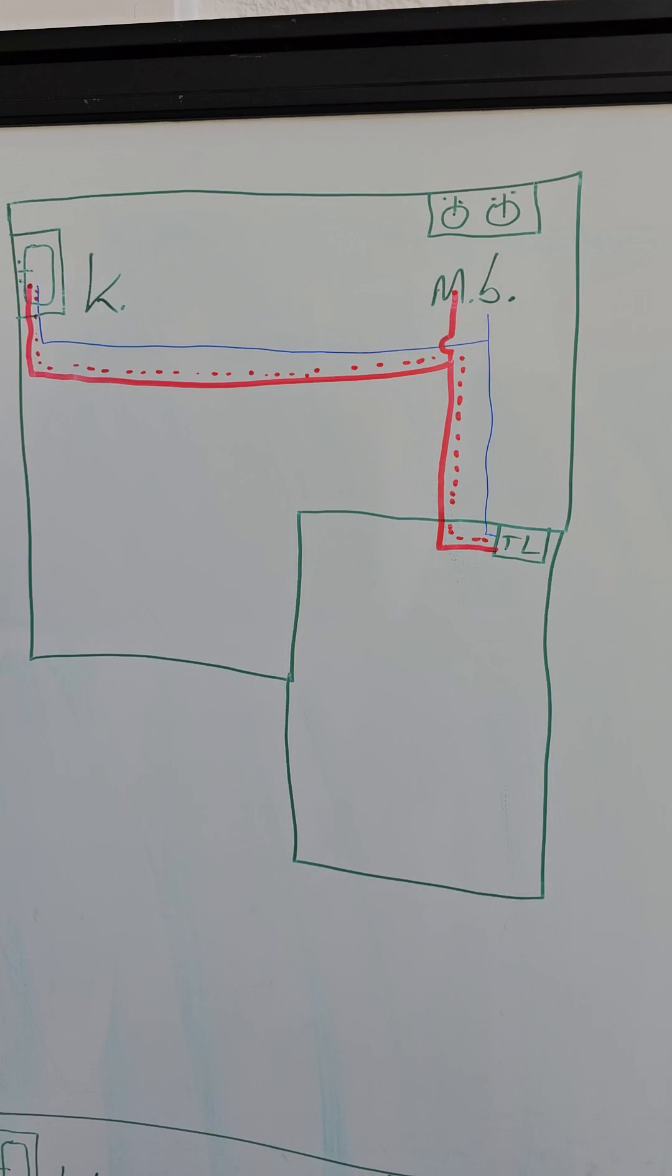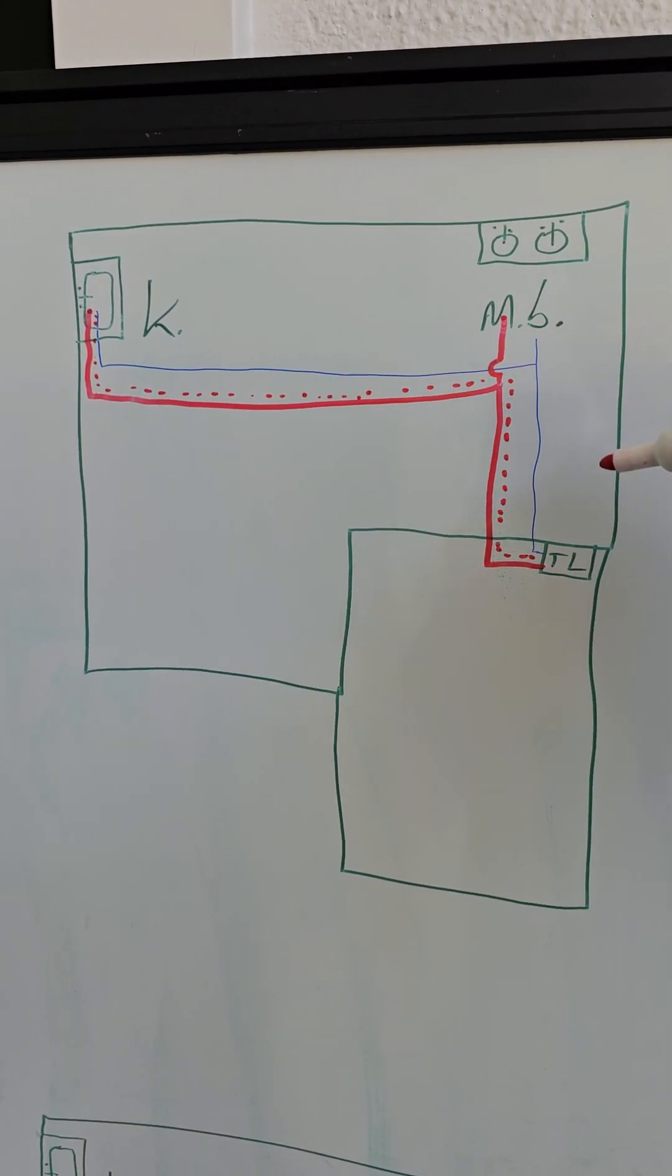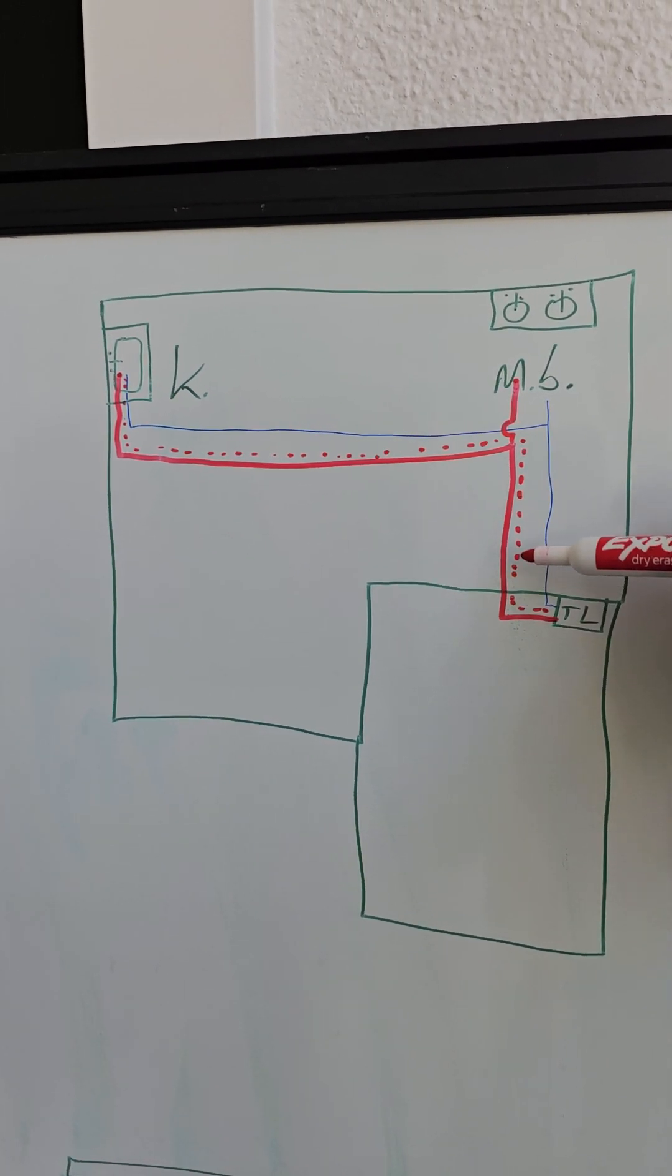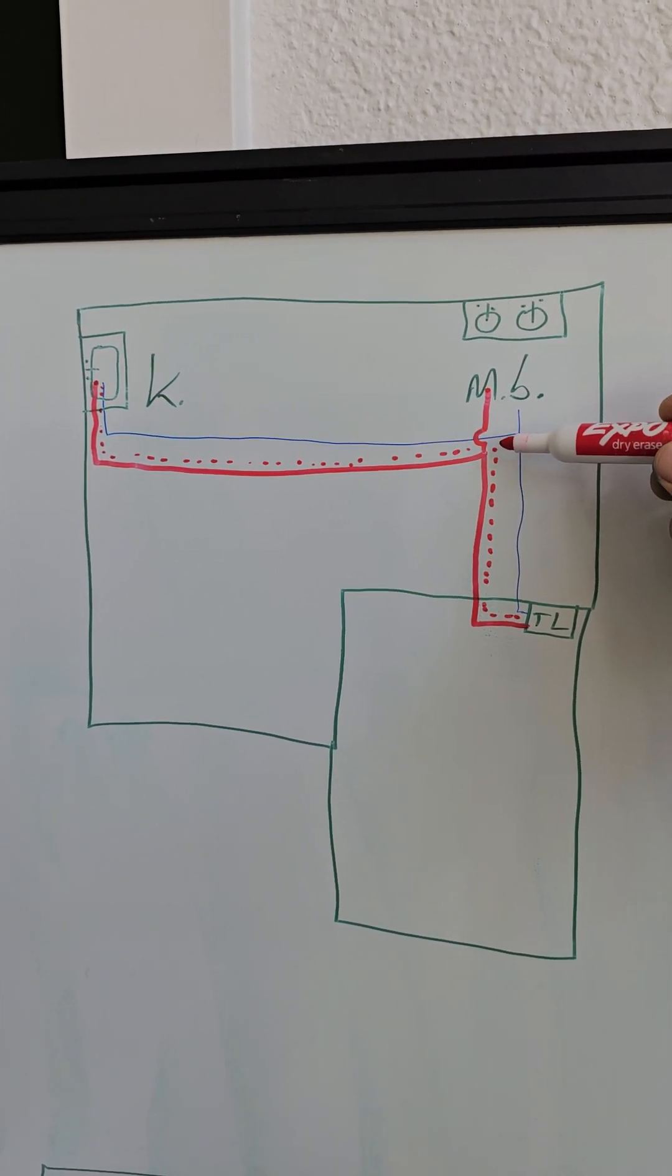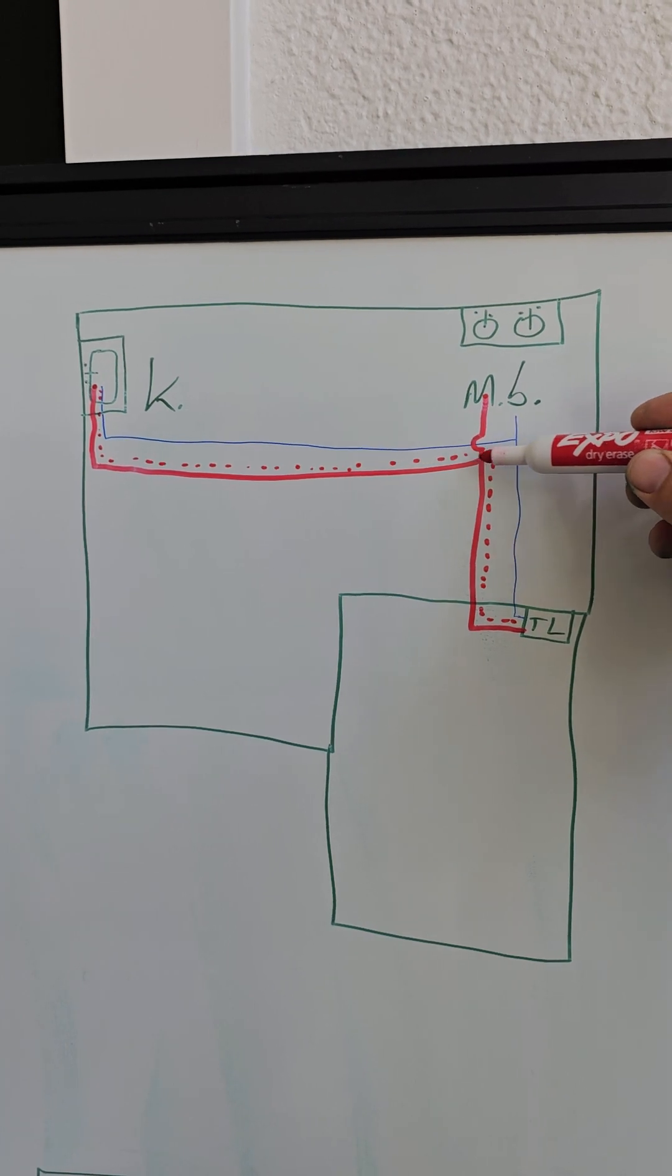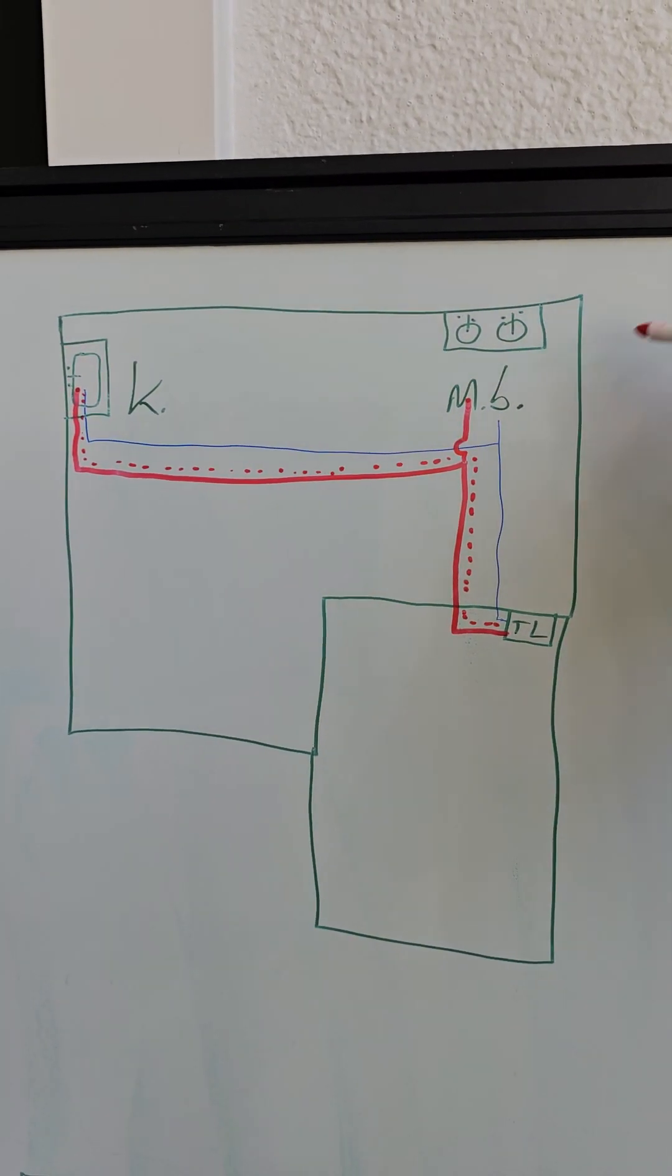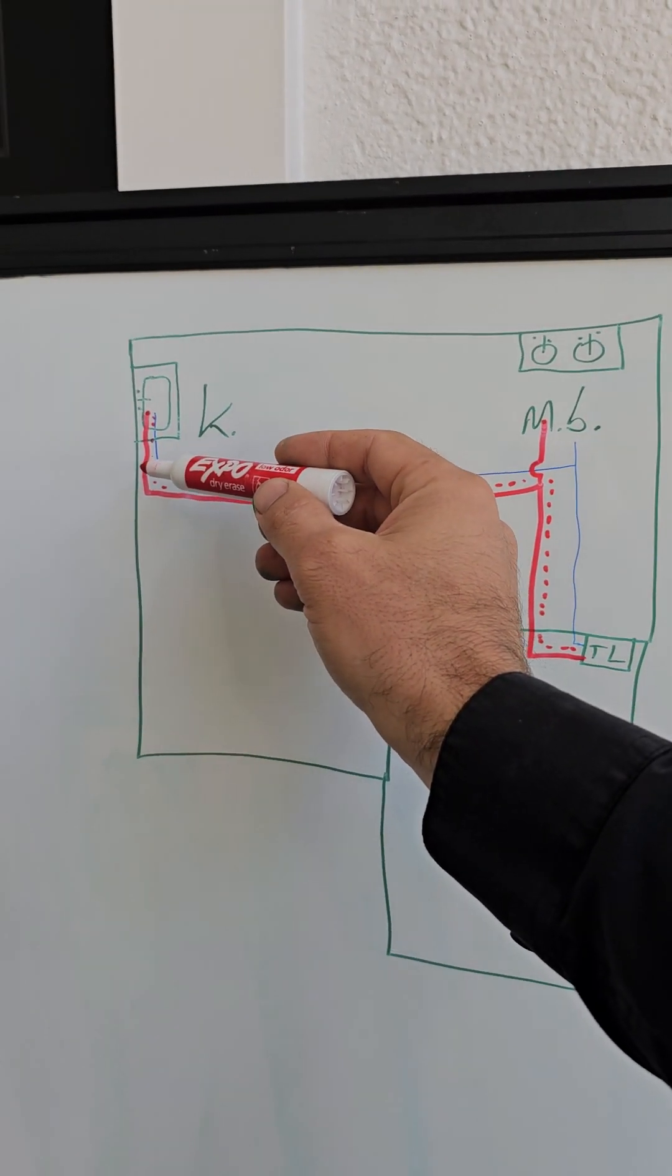This right here would be a kitchen. What I have here is some kind of efficient way how your house might have been built, so the water lines could have been ran to the nearest bathroom and then you have a branch here, a tee.